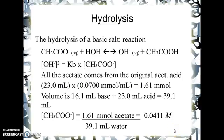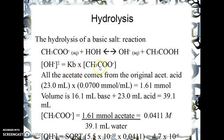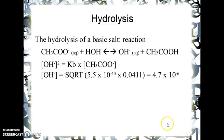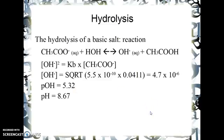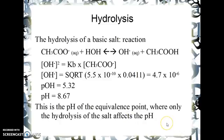Now we can find the hydroxide concentration: it's the square root of Kb times the acetate concentration. So [OH⁻] = √(5.5×10⁻¹⁰ × 0.0411) = 4.7×10⁻⁶ molar. Taking the negative log gives pOH = 5.32. Therefore pH = 14 − 5.32 = 8.67. That's reasonable because we know this is a basic salt, and the pH is indeed greater than 7.